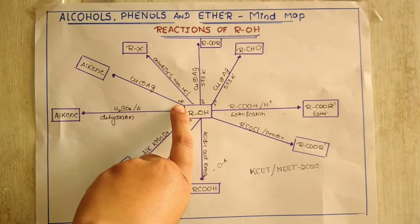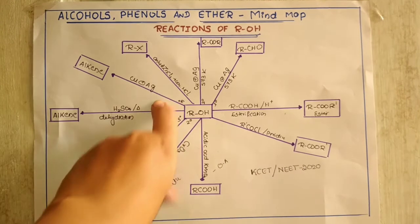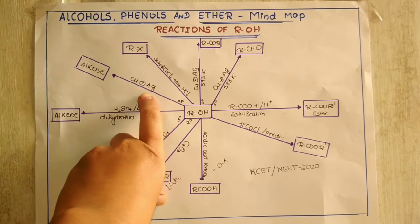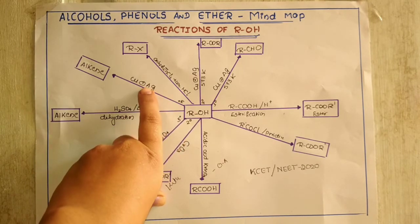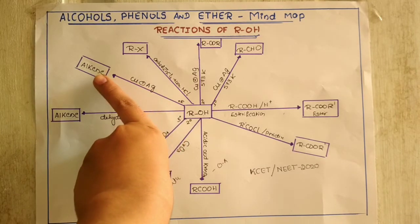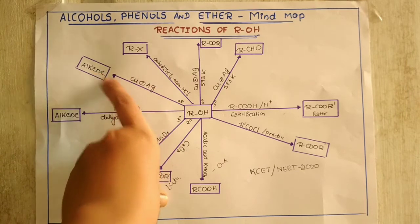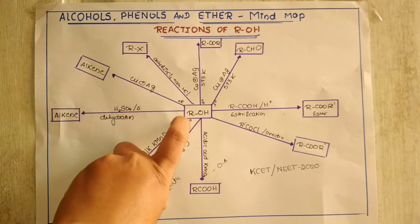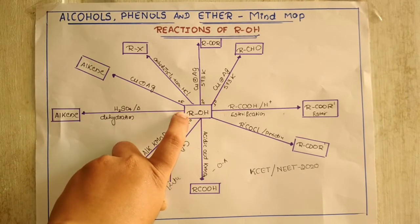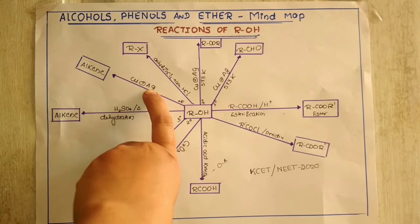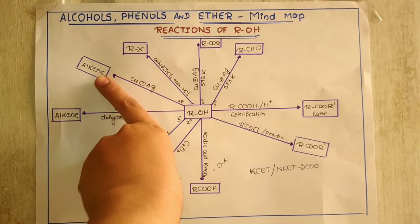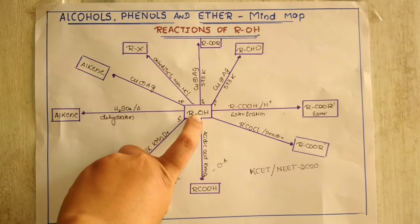The next one: tertiary alcohol when treated with copper or silver results in the formation of an alkene. This question has been asked repeatedly. Primary and secondary alcohols give different products, whereas tertiary alcohol when treated with copper or silver gives the respective alkene.